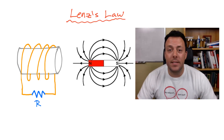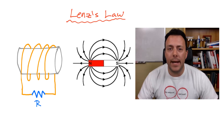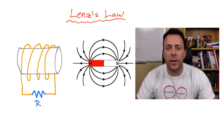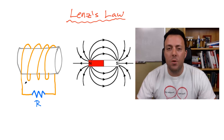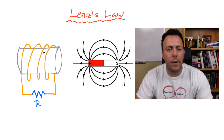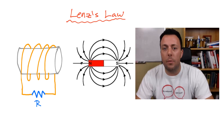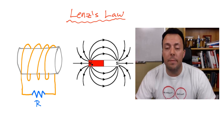Today I want to look at Lenz's Law. Lenz's Law is related to moving a magnet near a coil like the one I've shown here, and we're going to find out what the direction of the current is that's going to be induced when I move this magnet near the coil. I've got a piece of copper wire wrapped around a cylinder, connected to a resistor, and a simple bar magnet here. The picture also shows the field lines produced by the bar magnet, which go from the north pole to the south pole.